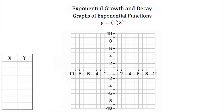Now let's try graphing an exponential function. We're given y is equal to 1 times 2 to the x. Our a is 1 and our b is 2. Since multiplying by 1 doesn't change a value, we can just consider this y is equal to 2 to the x.